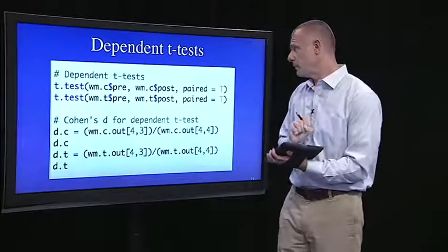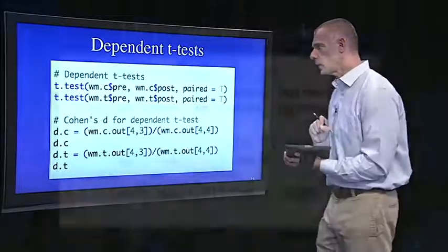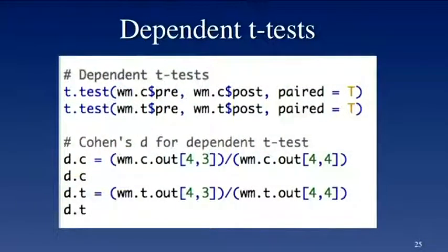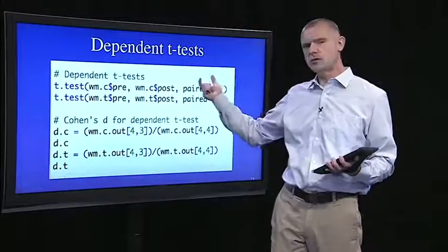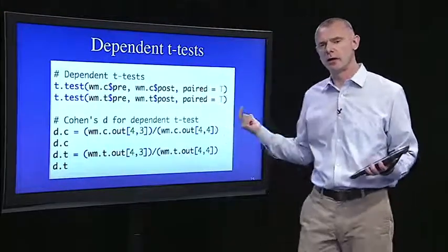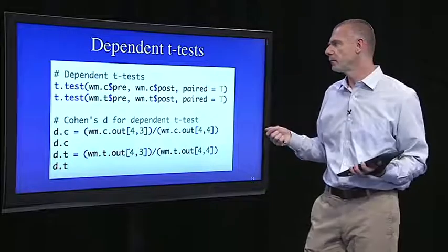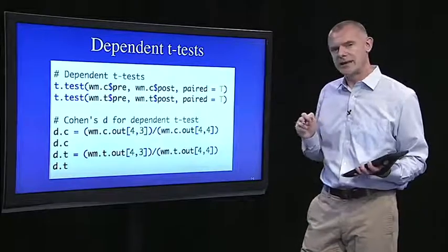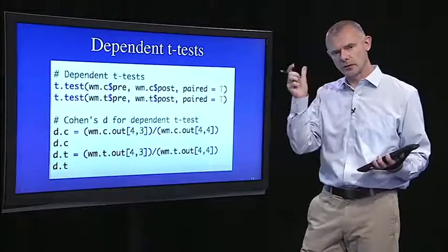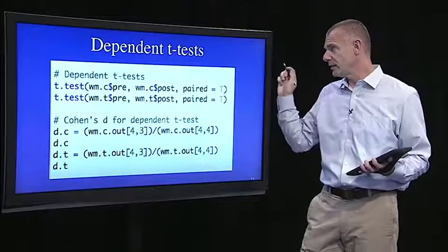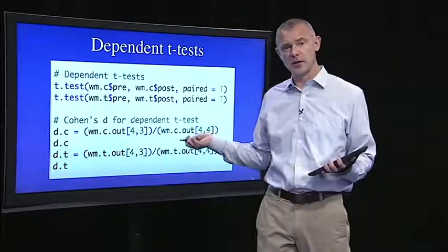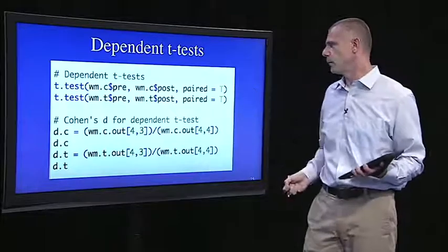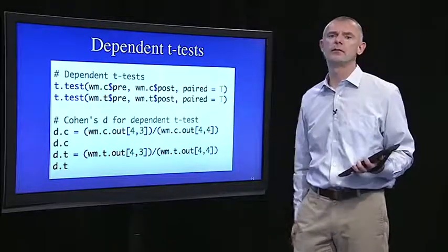So here's the code for the dependent t-test. The function is just t.test. And if it's a dependent t-test, then we want to set this argument paired equal to true. And all we have to do is just list the two variables we want to compare separated by a comma. So first I'm going to look in the control condition at the pre-post. That's WM.C dollar sign to access the variable name pre versus post. And then I do the same thing for the training condition.